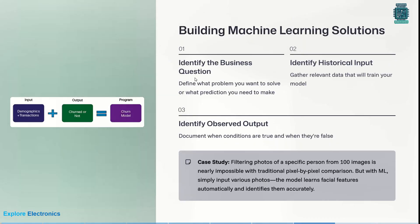Building machine learning solutions involves several steps. First, identify the business question — what problem are you facing and what solution do you need? Second, identify historical input — gather relevant data. Third, identify the observed output — document when conditions are true or false. The system takes what is true and builds its own model. In our example, the output is whether a customer churned or not, and the program is the churn model.